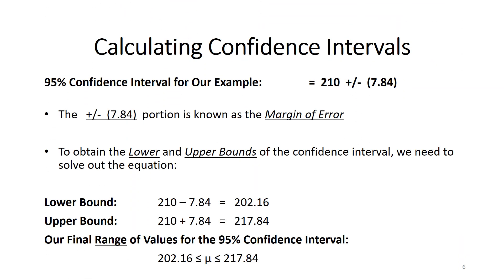Our 95% confidence interval for this example equals 210 plus or minus 7.84. That plus or minus 7.84 is referred to in statistics as the margin of error. We have a margin of error because we can never make a perfect conclusion about the unknown population value — we don't know exactly what the population mean is, but we can come up with a range of values around our sample estimate of 210.